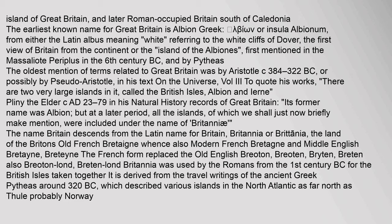To quote his works: 'There are two very large islands in it, called the British Isles, Albion and Ierne.' Pliny the Elder (c. AD 23–79) in his Natural History records of Great Britain: 'Its former name was Albion, but at a later period all the islands, of which we shall just now briefly make mention, were included under the name of Britanniae.'